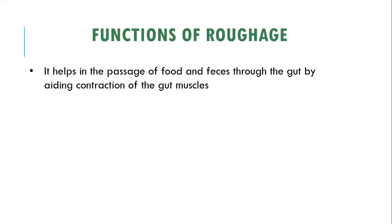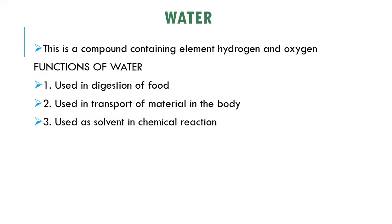Moving on, let's look at water. Water is a component that contains the elements hydrogen and oxygen. It can be obtained from various water bodies, but pure water can be obtained after boiling and filtering water from various water bodies, or by processing it from various industries.